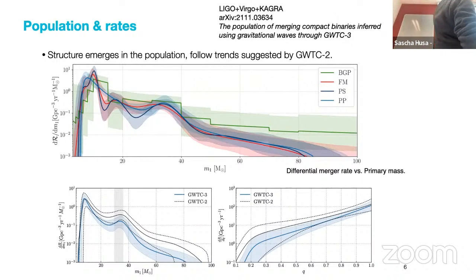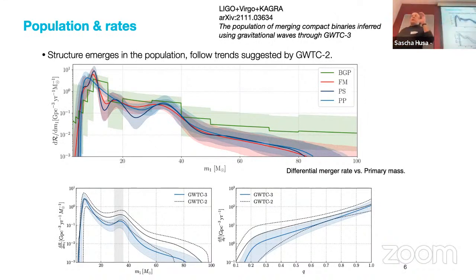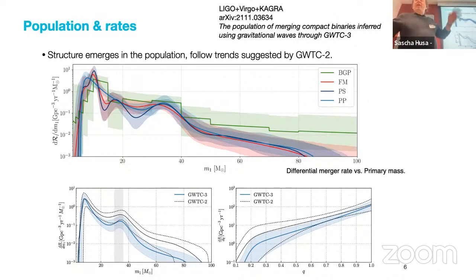The plot is a comparison of different population models with error bars, showing that different models give relatively similar predictions. These models are quite ad hoc, but there is a certain robustness because different models give relatively similar structure. Some substructure like local maxima is shown by different models, but I wouldn't over-interpret it at this point.